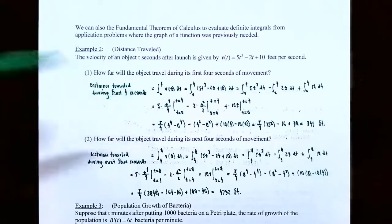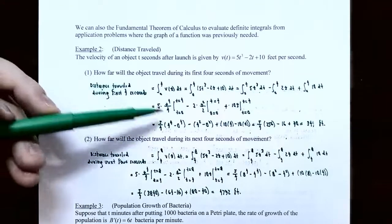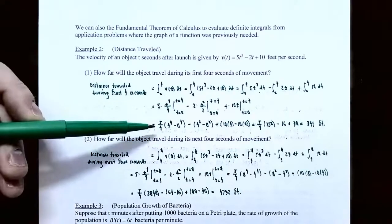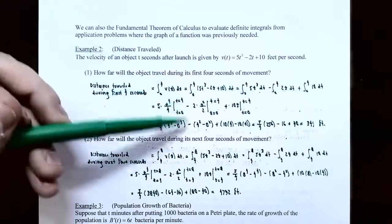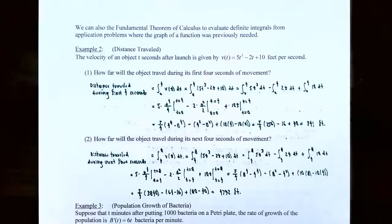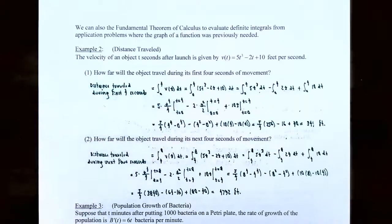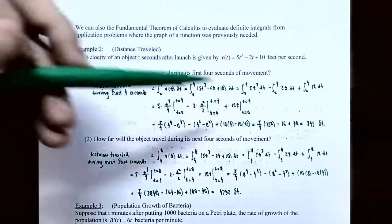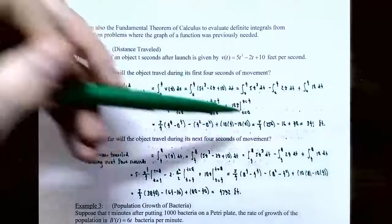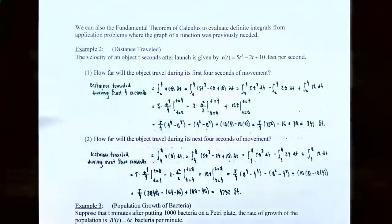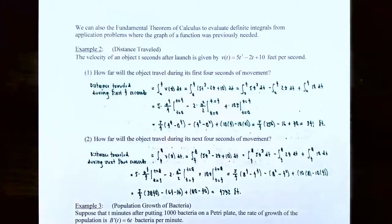Using the Fundamental Theorem: 5 fourths times quantity 4 to the fourth minus 0 to the fourth, minus quantity 4 squared minus 0 squared, plus quantity 10 times 4 minus 10 times 0. Simplifying: 5 fourths times 256 minus 0 gives 320, minus 16 minus 0 gives 16, plus 40 minus 0 gives 40. So 320 minus 16 plus 40 equals 344. The distance traveled by the object during the first four seconds is 344 feet.